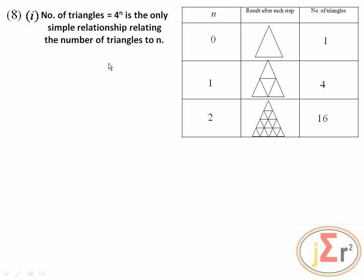We need to find the number of triangles when n equals 3. That will be 4 to the power of 3, which equals 64. Also, we need to determine the number of triangles when n equals 6. That is 4 to the power of 6, which turns out to be 4096.